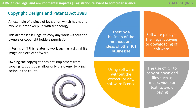An example of a piece of legislation which has had to evolve in order to keep up with technology is the Copyright Designs and Patents Act of 1988. This act makes it illegal to copy any work without the owner or copyright holder's permission. In terms of technology, this relates to work such as digital files, images, an algorithm or a piece of software. Owning the copyright obviously doesn't stop others from copying it, but it does allow only the owner to bring actions in the courts.